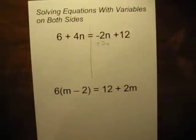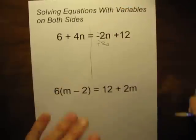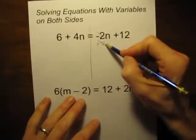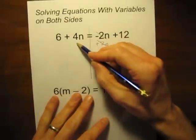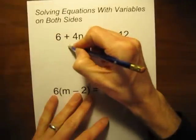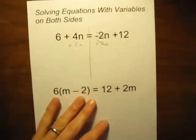Negative 2n plus 2n cancels out. It equals 0. But because this is an equation, any change you make to one side, you need to make that same change to the other. So if we're going to add 2n to this side, we need to add 2n over here.